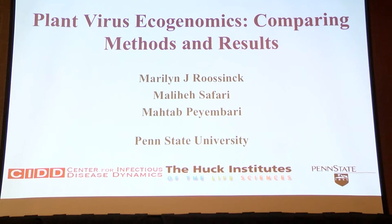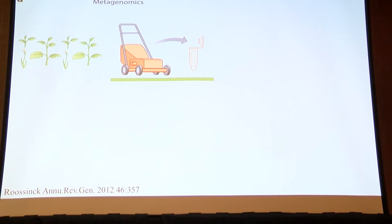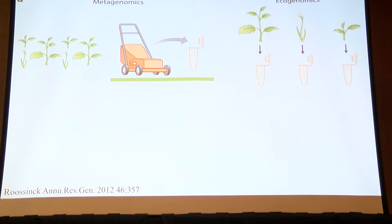I thought I kind of coined the term ecogenomics about a decade ago. This is how we like to think about plant viruses. Metagenomics involves taking environmental samples — so-called lawnmower experiments — where you take a little area, mow everything down and see what's there. But most of our work has been done differently: we take individual plants and look at the virus in an individual plant, so we always know who the host is.